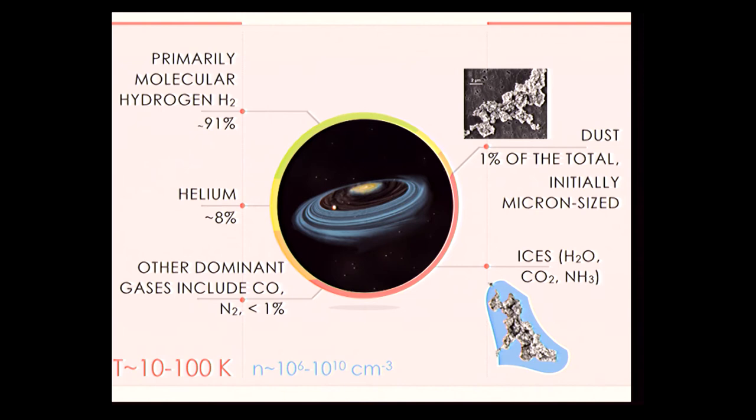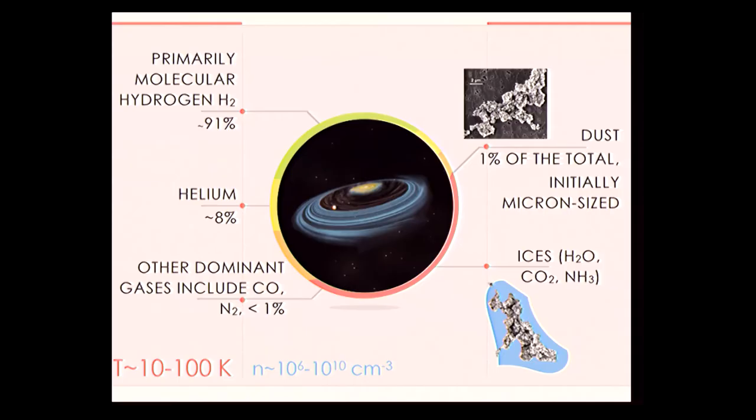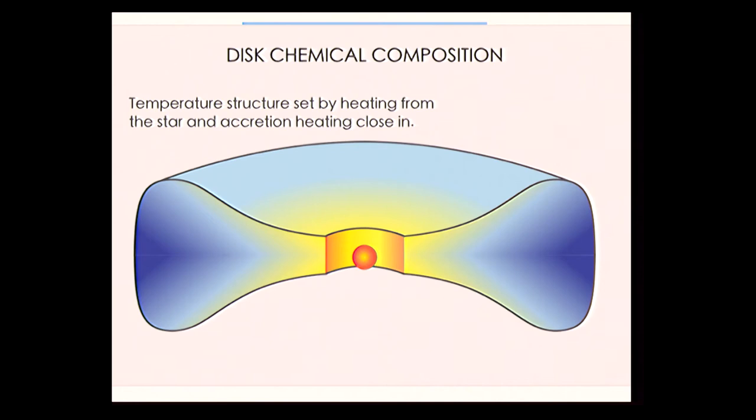These disks look pretty similar to the interstellar medium they form from. They're mostly molecular hydrogen with some helium, and then trace percentages of the good stuff that goes into us — carbon, oxygen, and nitrogen. They have a component of interstellar dust, similar to the dust grains our planet formed from. At low temperatures, those grains become coated in ice — water, CO, CO₂, ammonia — all good prebiotic ices. The composition of a given system is set largely by the host star: hot close in, giving ice-poor chemistry in the inner regions, and ice-rich outer disk chemistry further out.